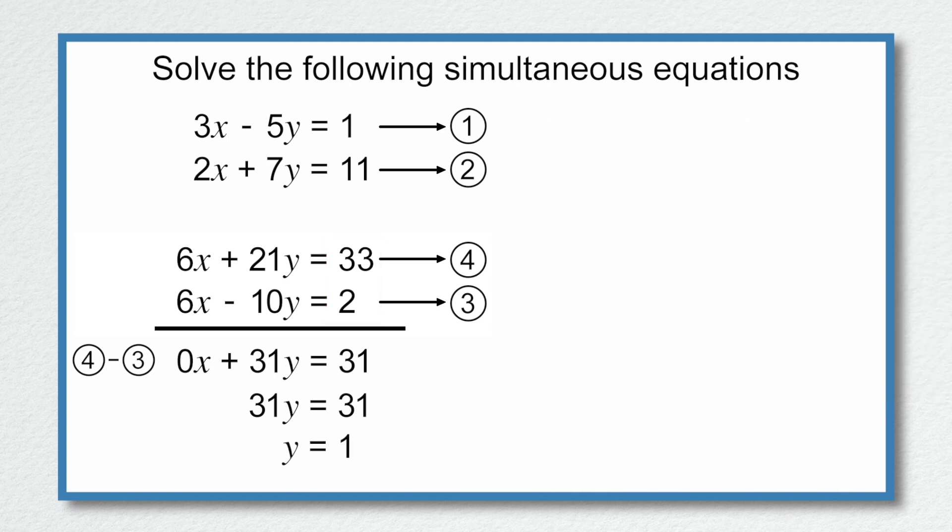We now do a substitution. We are going to substitute y is equal to 1 into one of the original equations to find x. Let's use equation 1 for no particular reason. 3x subtract 5 multiplied by 1 is equal to 1. So 3x subtract 5 is equal to 1. 3x is equal to 6, which means that x is equal to 2.